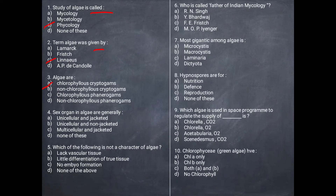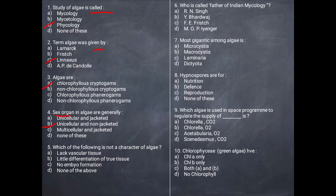Next question: Sex organs in algae — how are they? In algae, sex organs are absent, unicellular, and non-jacketed.